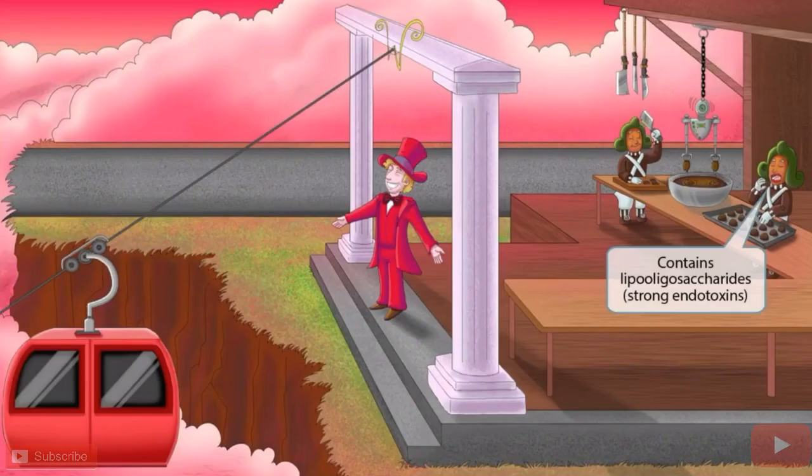The same Oompa Loompa opens his mouth to eat the chocolate, and his big prominent lips stick out. Lips sounds like lipo-oligosaccharide, so the taste-testing Oompa Loompa with big lips should help you remember that Neisseria contains lipo-oligosaccharides present in the outer membrane of the cell wall. Lipo-oligosaccharides act as strong endotoxins that cause sepsis and shock.